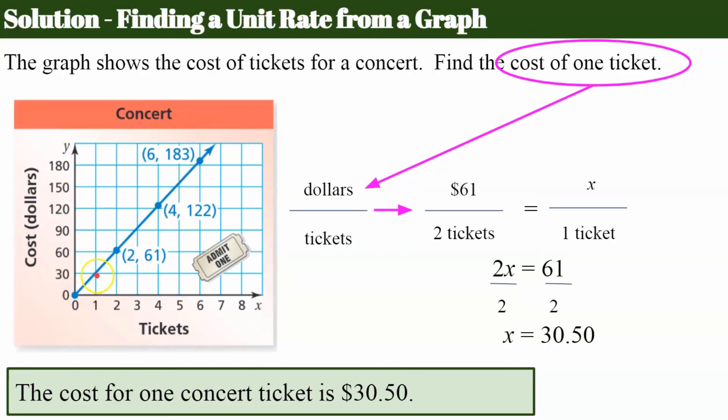Here's another trick. Be careful because this line looks like it passes through when X is one, that it passes through 30. But it's deceiving. It's really $30.50. So when you have an exact ordered pair given to you, use that to be safe.